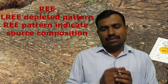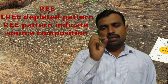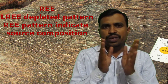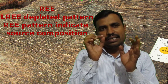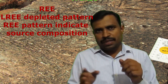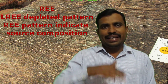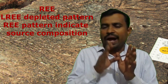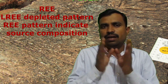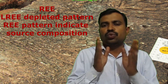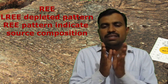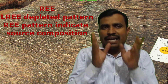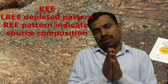Now, the rare earth elements — we can say REE. Although most of the komatiites show a LREE depleted pattern, some of them exhibit a flat to LREE-enriched REE pattern. Since komatiites are formed by moderate to high degrees of melting of the mantle, their REE pattern indicates the source composition. On the basis of this REE pattern, we can identify what is the source composition of this particular komatiite rock.